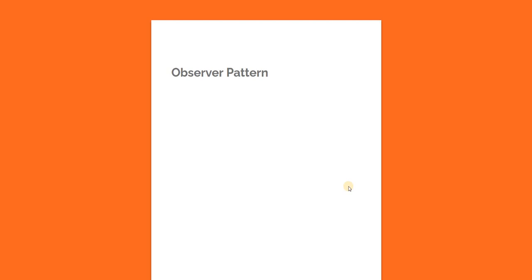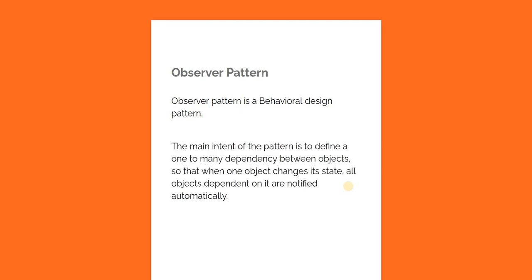Hello everyone and welcome to dotnet core central. In today's video I am going to talk about the Observer design pattern, which is one of the Gang of Four design patterns. The Observer design pattern is a behavioral design pattern. The main intent of this pattern is to define a one-to-many dependency between objects so that when one object changes its state, all dependent objects are notified automatically.